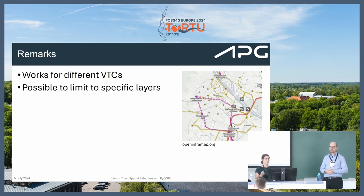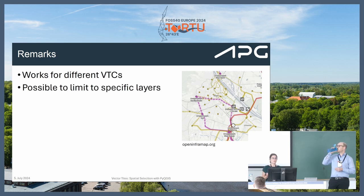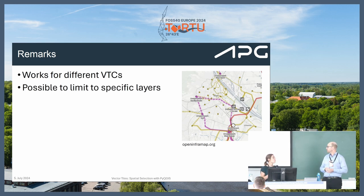The script works for different vector tile caches. We used it especially for this use case but tried it and it also works for the Open Infra Map, which is interesting in our field because power lines are in there — data from OpenStreetMap, especially for infrastructure. The same process can be used for that data. Also important: the vector tile cache has possibly multiple layers, but you can tell the algorithm to use only the layer you're interested in.